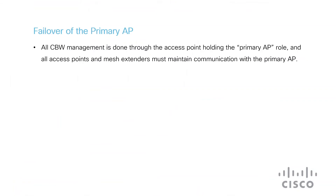First, I'll explain how failover of the primary AP works in Cisco Business Wireless. All Cisco Business Wireless, or CBW, management is done through the access point holding the primary AP role. All access points and mesh extenders must maintain communication with the primary AP.